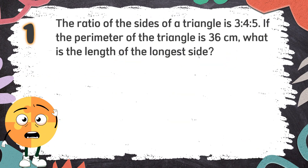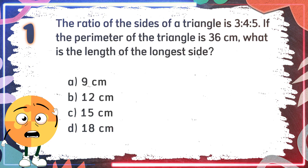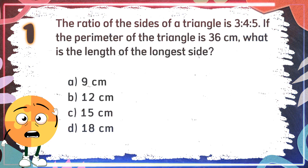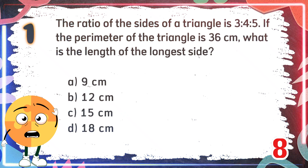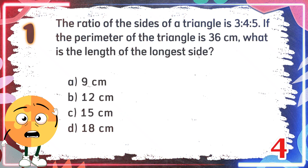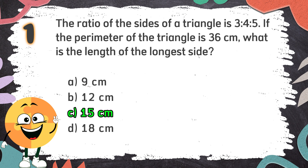Number 1: The ratio of the sides of a triangle is 3 to 4 to 5. If the perimeter of the triangle is 36 centimeters, what is the length of the longest side? Again, the ratio of the sides of a triangle is 3 to 4 to 5. If the perimeter of the triangle is 36 centimeters, what is the length of the longest side? The choices are: A. 9 centimeters, B. 12 centimeters, C. 15 centimeters, D. 18 centimeters. The correct answer is C. 15 centimeters.